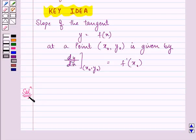Now here, we need to find the slope of the tangent to the curve y equals 3x raised to the power 4 minus 4x at x equals 4.